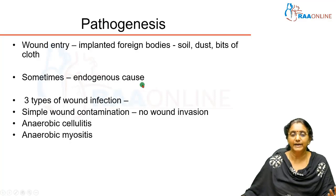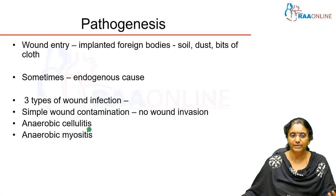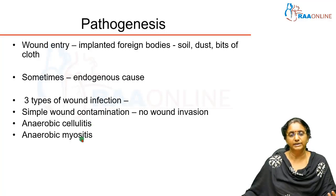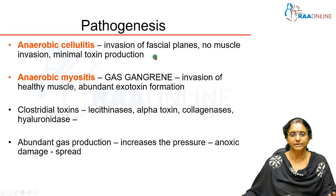In Clostridium wound infection there are three types. First is simple wound contamination — no invasion, Clostridium is only on the surface. Second is anaerobic cellulitis, where clostridia can reach the fascia but do not invade the muscles. Third and most severe is anaerobic myositis, where infection involves right from the skin down to the muscle level.